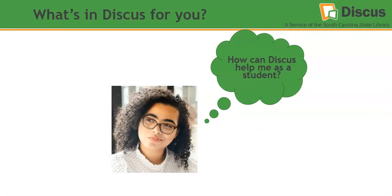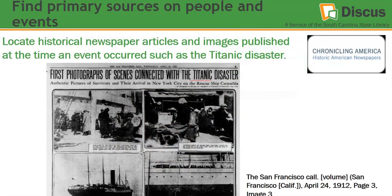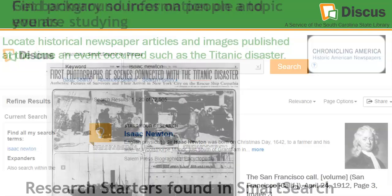How can Discus help you as a student? You can find primary sources on people and events. You can locate historical newspaper articles and images published at the time when an event occurred, such as this one for the Titanic disaster. Look at some of the first photographs of scenes connected with the Titanic disaster — this was published in April of 1912 in a newspaper called the San Francisco Call. So if you're working on any kind of paper or historical project where you need primary sources, Discus is a great place to start.